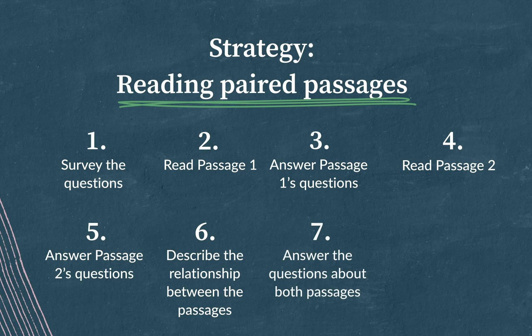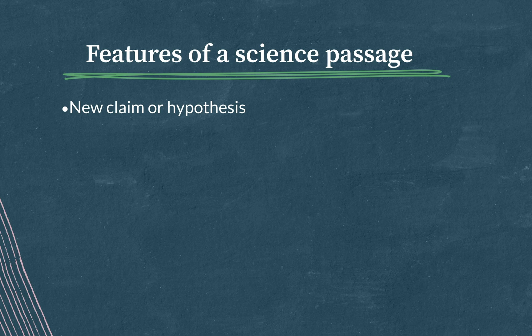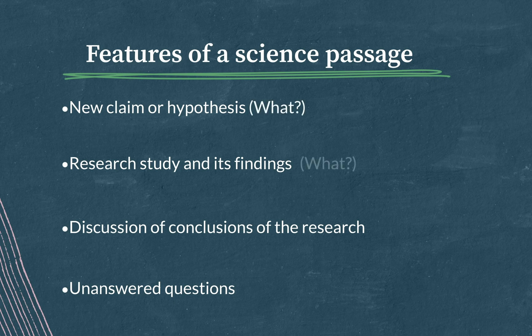Now remember that science passages on the SAT usually feature a new claim or hypothesis, along with research that supports it. Sometimes we also see discussion of the conclusions of the research and possible future questions that still need to be answered. Basically, there'll be a 'what' section and a 'so what' section that will get to the main point. And you might see a section about implications of the research — in other words, a 'what's next' section.